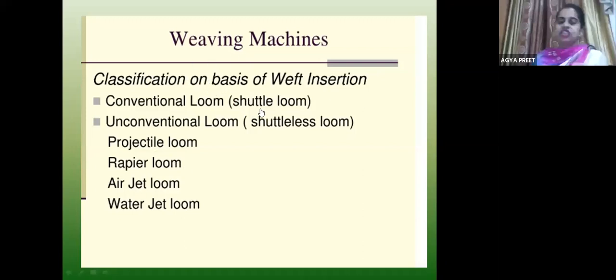The classification of weaving machines is on the basis of weft insertion. We have shuttle looms where we insert weft with the help of a shuttle. Another type is the non-conventional loom, i.e. shuttleless looms where the shuttle is not used — projectile, rapier, air jet and water jet.